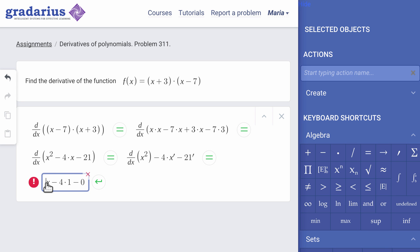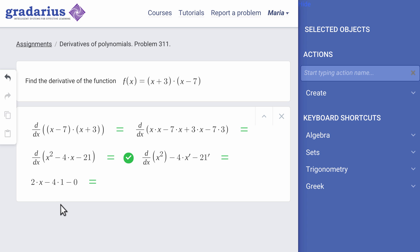Maria corrects her error. The green circle appears to show that Maria's correction was successful.